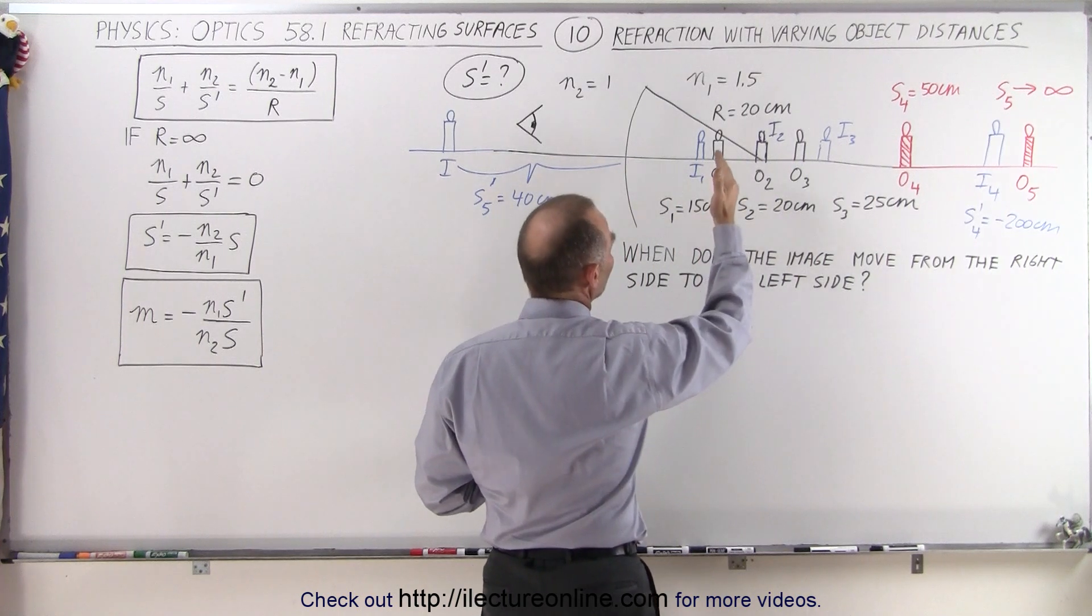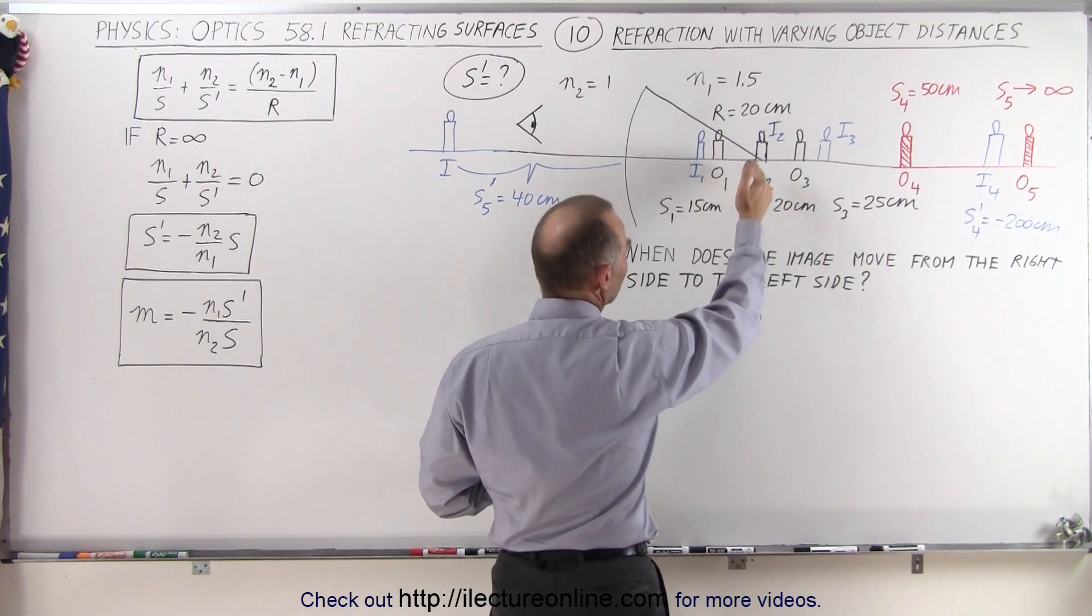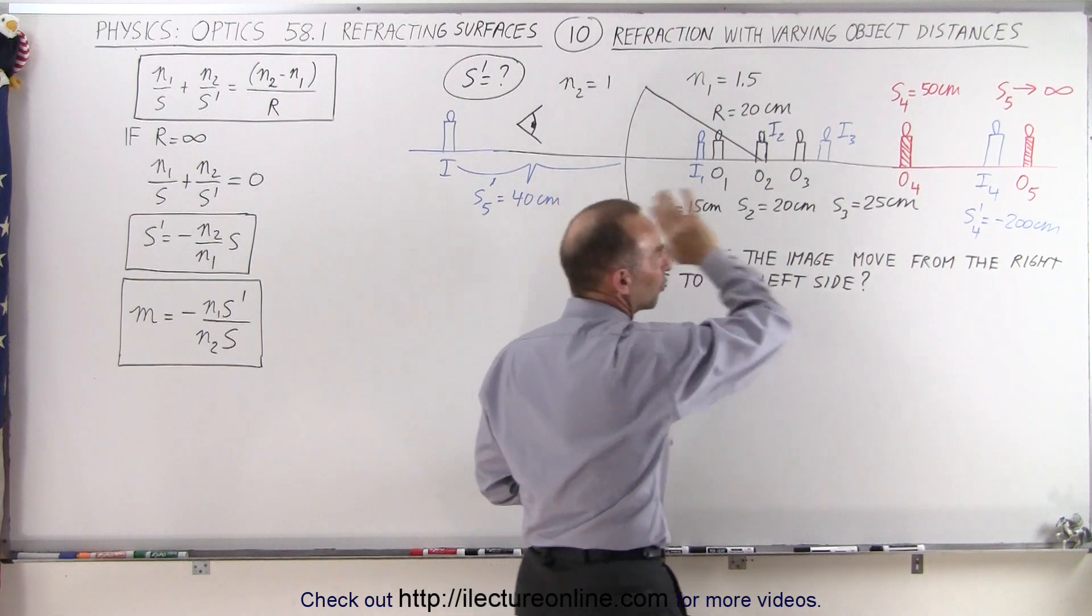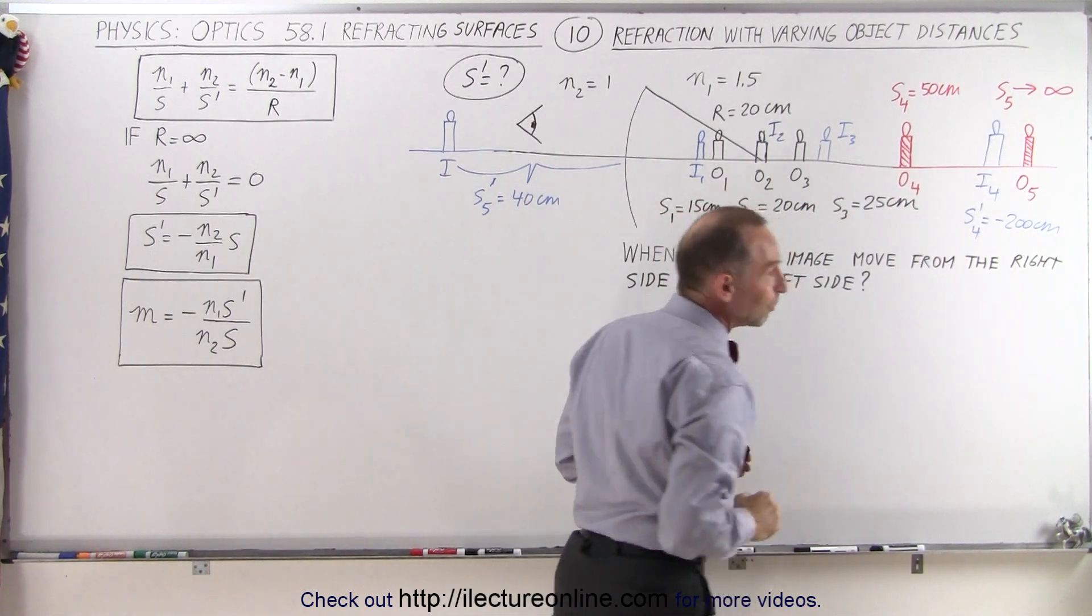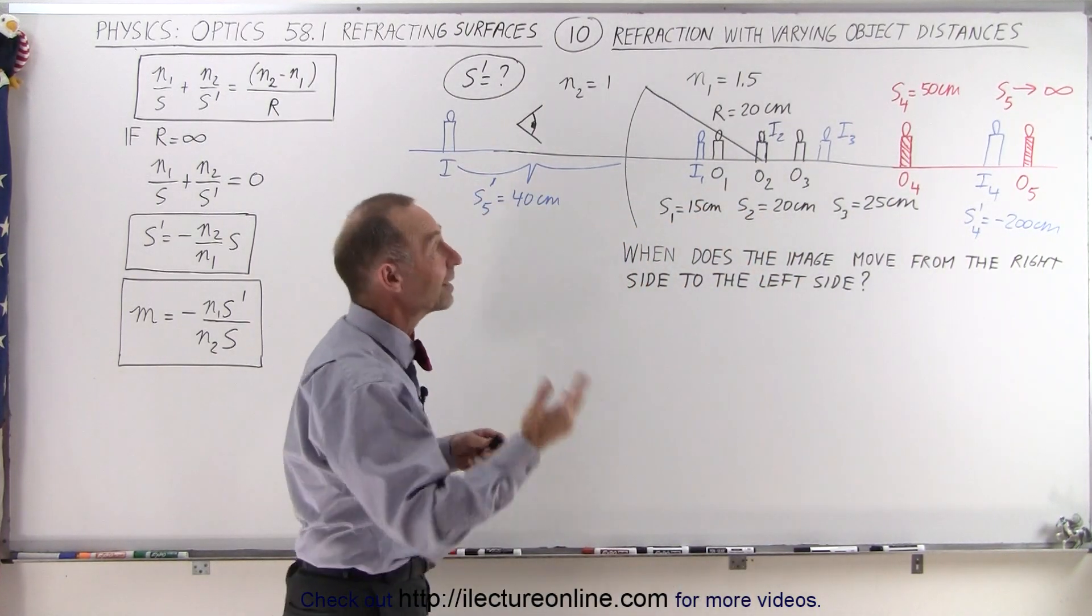And we've noticed that starting from 15 centimeters going to 20, 25, and 50, and so forth, the image was moved to the right much faster and much farther than the object did.